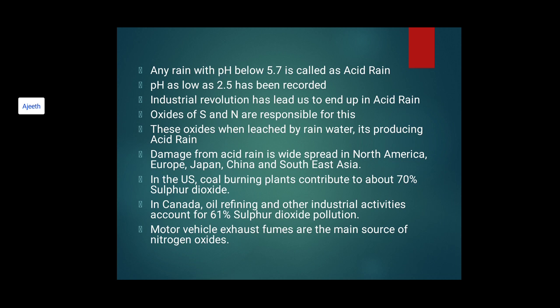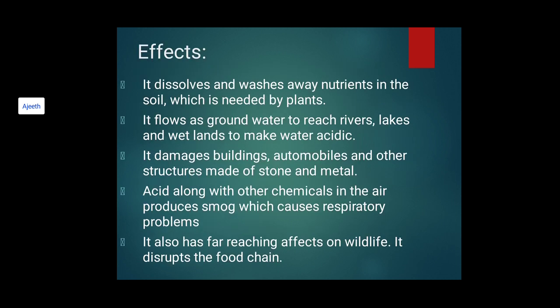In the U.S., coal-burning plants contribute about 70% of sulfur dioxide. Coal burning and coal mining are very harmful — for instance, a group has proposed coal mining in Goa, facing strong opposition from local people. In Canada, oil refining and other industrial activities account for 61% of sulfur dioxide pollution. Motor vehicle exhaust fumes are also a main source of nitrogen oxides, meaning even the vehicles we drive contribute to acid rain.